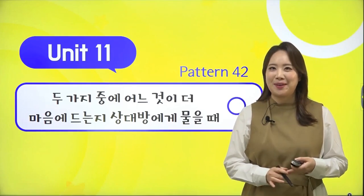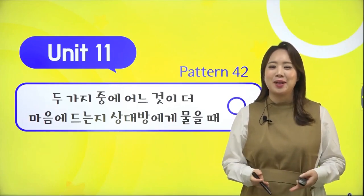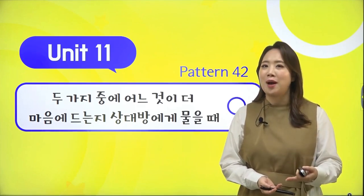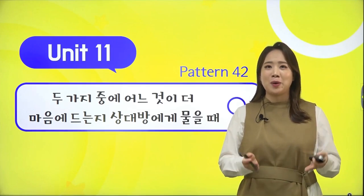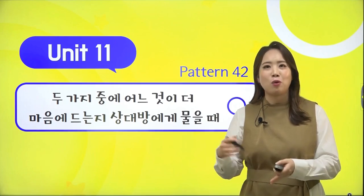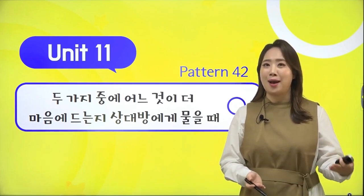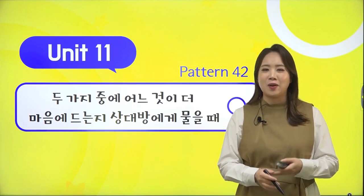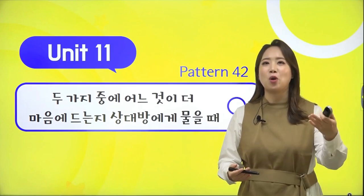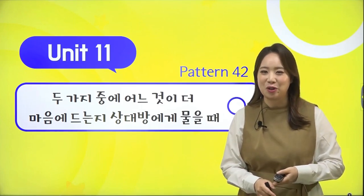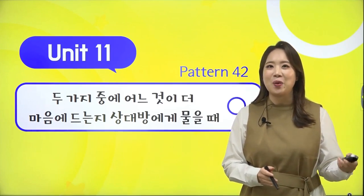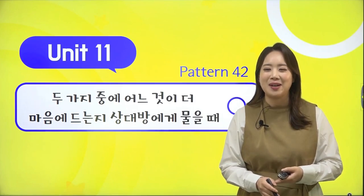오늘 두 번째 패턴 한번 들어가 보려고 하는데요. 대화문 안에 친구들이 야구하고 축구 중에 뭐가 더 좋아?라고 얘기하고 있어요. 일상생활에서 A하고 B 중에서 어떤 게 더 좋은지를 질문할 수 있죠. 그럴 때 쓸 수 있는 표현이 'Which one do you like better? A or B?'의 형태예요.